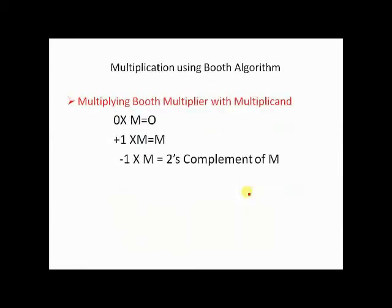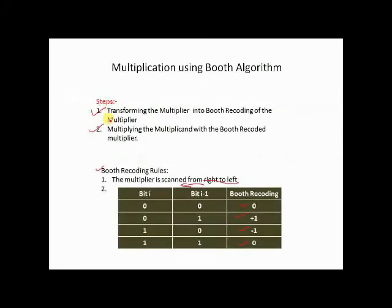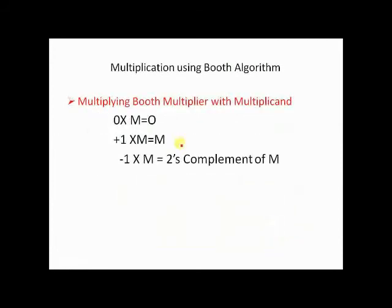The second part is multiplying with the Booth multiplier. When you do a recording of the multiplier, you will get 0, +1, or -1. When you multiply with 0, you get 0. With +1 you get the multiplicand itself. But if you multiply with -1, you get the 2's complement of the multiplicand.